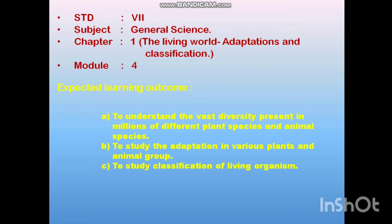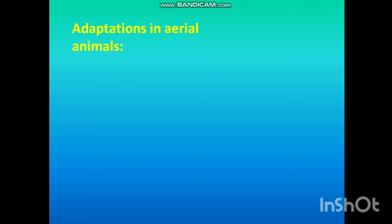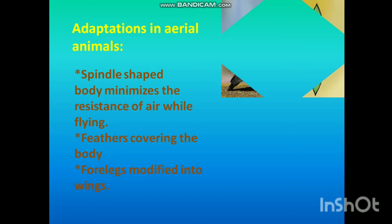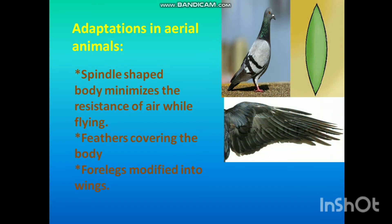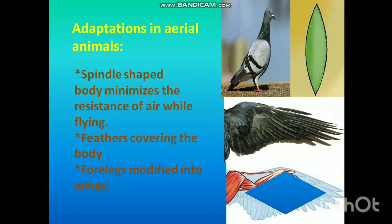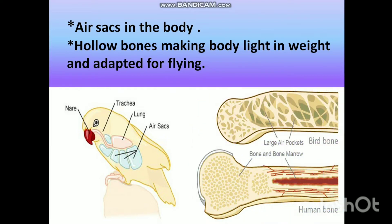Standard 7 General Science, Chapter 1: The Living World — Adaptation and Classification, Module 4. Let's begin with adaptation in aerial animals. The spindle-shaped body of birds minimizes air resistance while flying. The body of birds is covered with feathers and their forelegs are modified into wings. Air sacs are present in the body of birds, and hollow bones make the body light in weight, making flying easier.